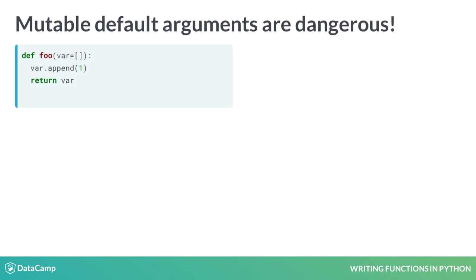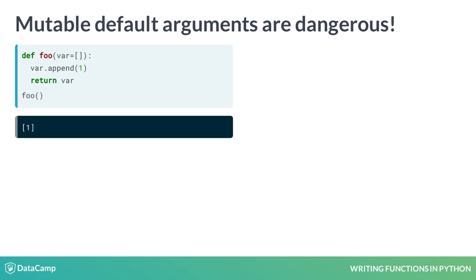Finally, here is a thing that can get you in trouble. foo is a function that appends the value 1 to the end of a list. But whoever wrote this function gave the argument an empty list as a default value. When we call foo the first time, we get what you would expect, a list with one entry.